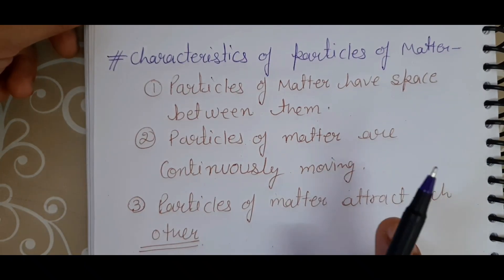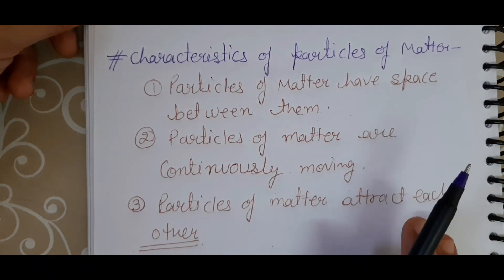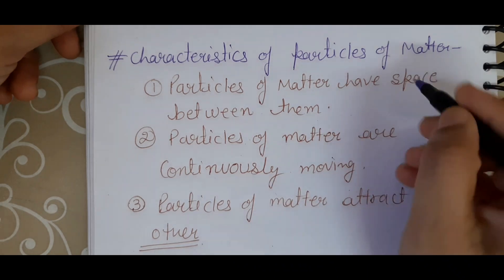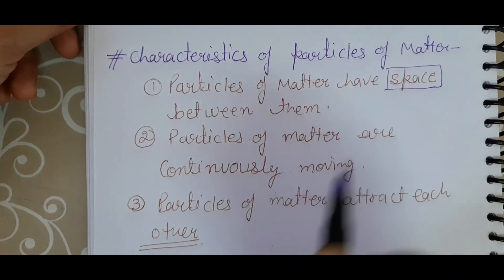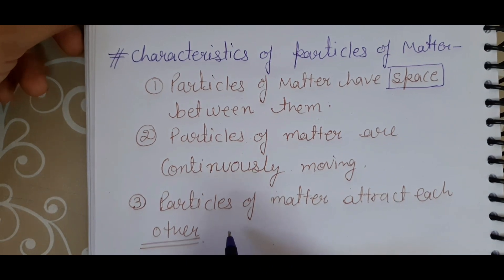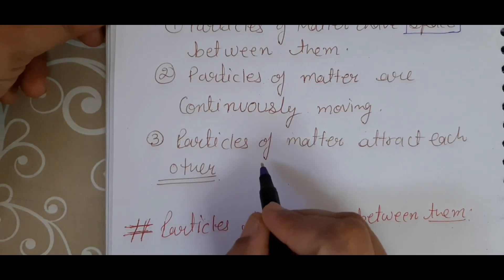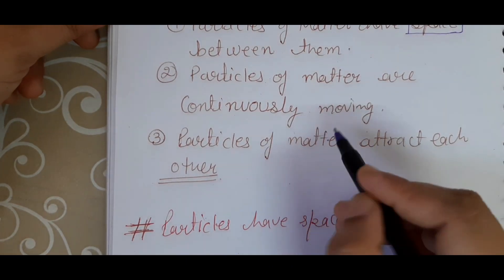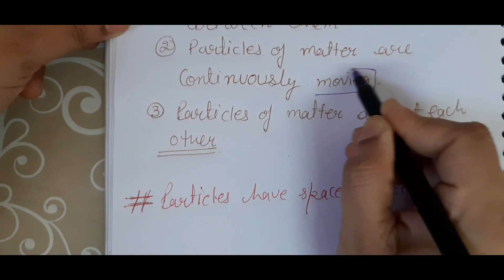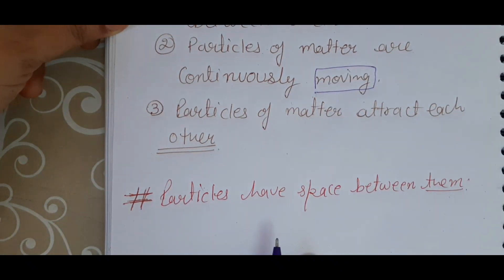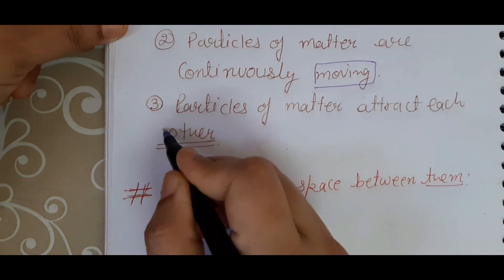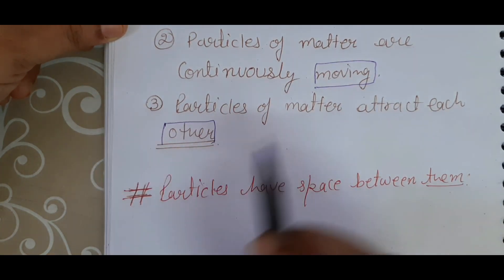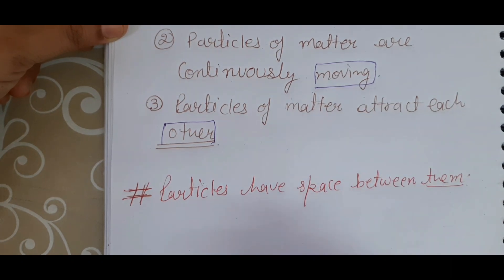Basically, there are three characteristics of the particles of matter. The first characteristic is that the particles of matter have space between them. The second characteristic is that the particles of matter are continuously moving. And the third characteristic is that the particles of matter attract each other. Now we will discuss each one by one.